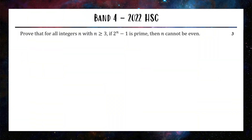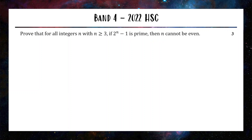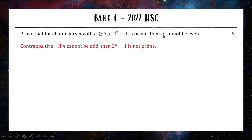Moving on to a band 4 question — out of multiple choice now. From the 2022 HSC paper: prove that for all integers n, if n is greater than or equal to 3, if 2^(n-1) is prime then n cannot be even. This is a situation where we have an if-then statement to prove, but the first part — the 'if' section — is more complicated than the second half. The first part involves a power and looking at primes; the second part, 'cannot be even,' is nice and easy. When the first part is more complicated than the second, this is a great application of proof by contrapositive. We take the contrapositive: negate both parts and reverse the direction — changing to 'n cannot be odd' implies '2^(n-1) is not prime.' If we prove this contrapositive, the original statement is also true.